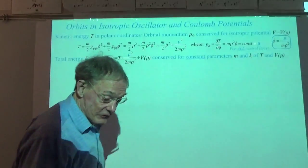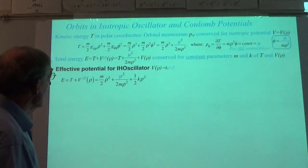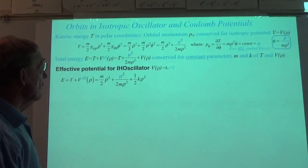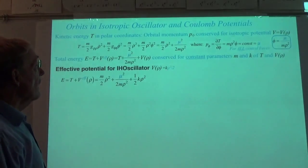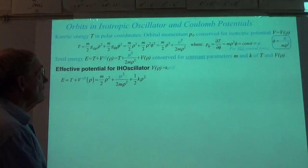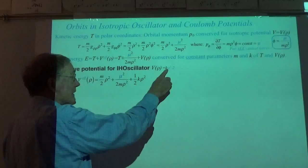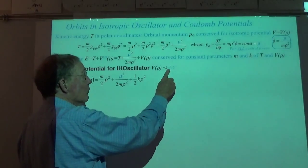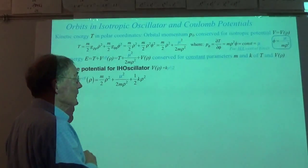We're going to compare how things behave with an inverse-r-squared potential outside the sophomore physics Earth, versus a ρ² parabolic oscillator potential for the inside. Here is the effective potential for the isotropic harmonic oscillator, with K·ρ²/2. This is the one we worked with for the neutron orbiting inside the sophomore physics Earth.